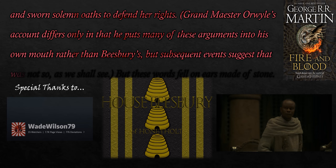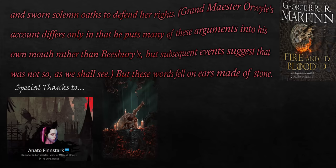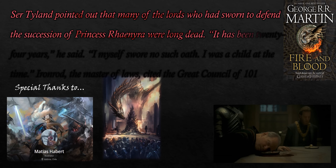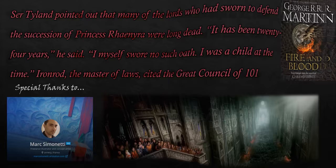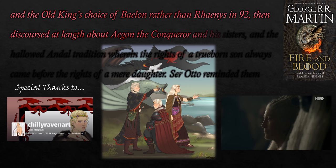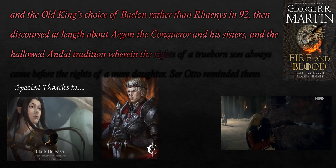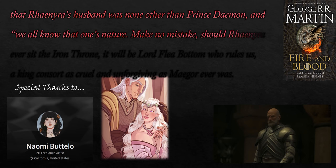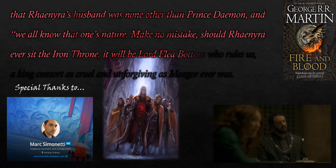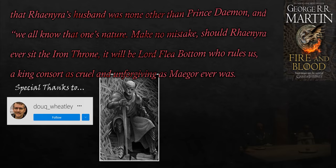Lord Beesbury reminded the council that Rhaenyra was older than her brothers, had more Targaryen blood, and the late king had chosen her as his successor — that he had repeatedly refused to alter the succession despite the pleading of Queen Alicent and her Greens; that hundreds of lords and landed knights had done obeisance to the princess in 105 AC and sworn solemn oaths to defend her rights. But these words fell on ears made of stone. Ser Tyland pointed out that many of the lords who had sworn to defend the succession of Princess Rhaenyra were long dead. 'It has been 24 years,' he said. 'I myself swore no such oath — I was a child at the time.' Ironrod, the Master of Laws, cited the great council of 101 and the old king's choice of Baelon rather than Rhaenys in 92, and discoursed at length about the hallowed Andal tradition wherein the rights of a trueborn son always came before the rights of a mere daughter.